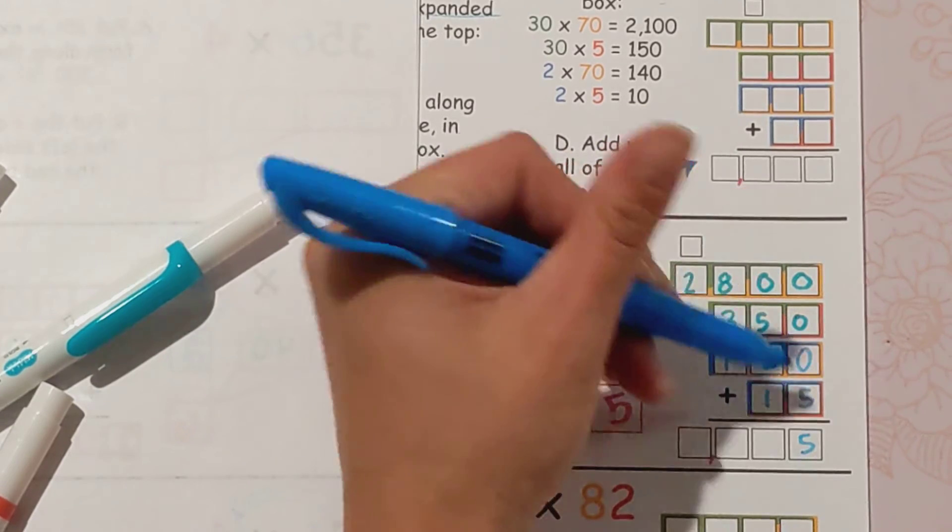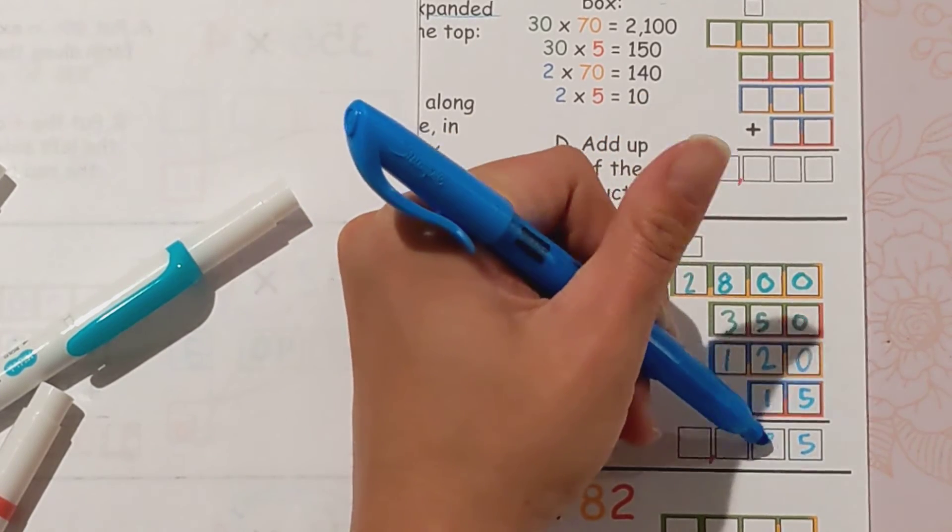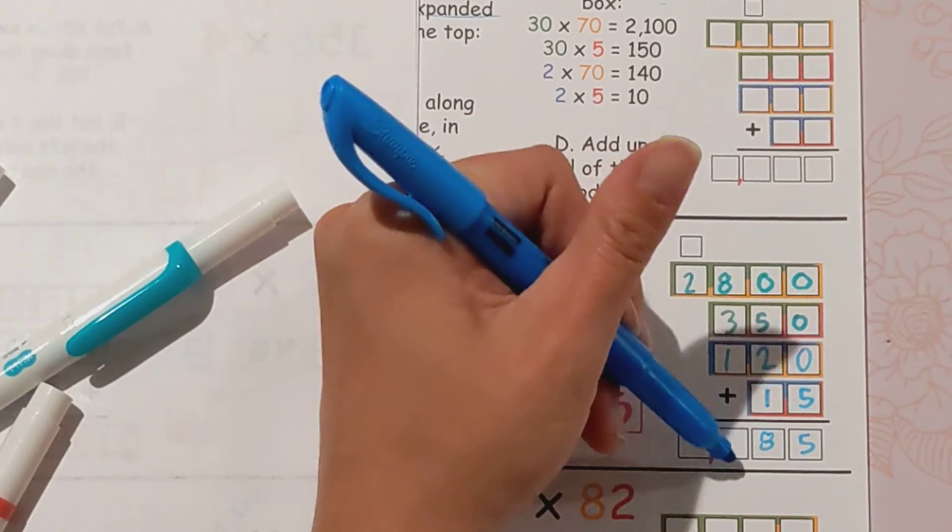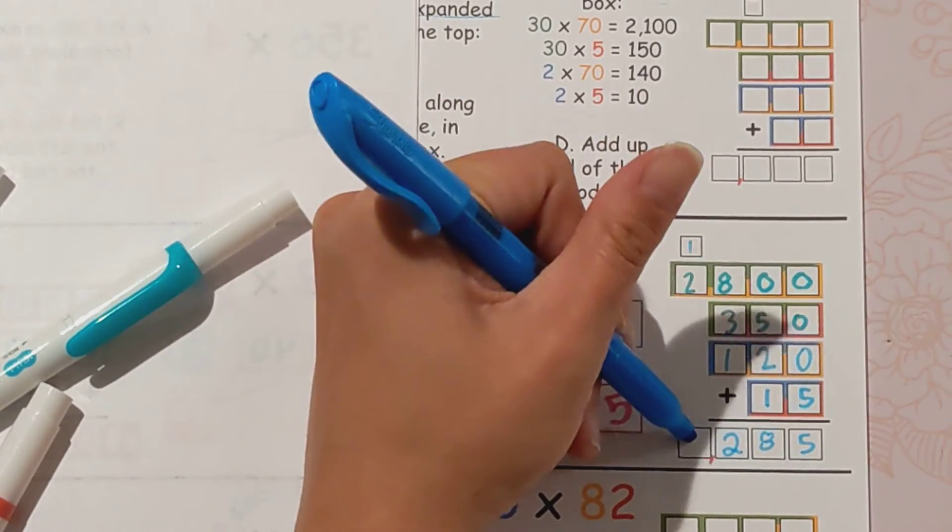Zero plus zero plus zero plus five is five. Five plus two plus one is eight. Eight plus three plus one is twelve, carry the one. And one plus two is three.